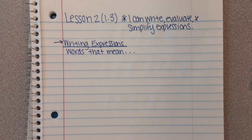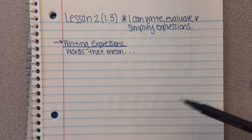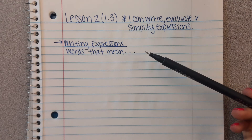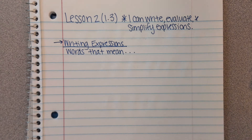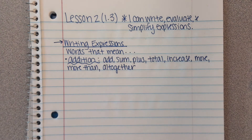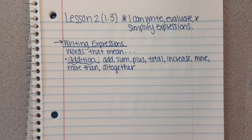Our I can statement has three parts: writing, evaluating, and simplifying. We're going to start with writing expressions, and to do that we need to know words that mean our operations. For addition, we have: add, sum, plus, total, increase, more, more than, and altogether. We could probably brainstorm more words, but this list should be plenty for our practice today.